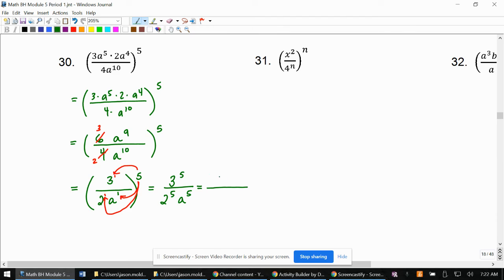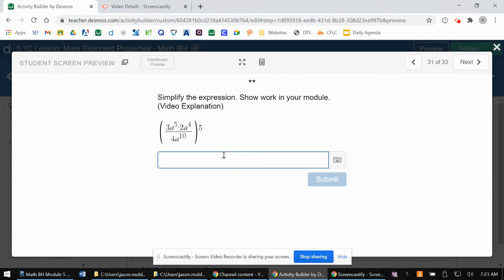All right. Now is a good time to use a calculator. 3 to the fifth is 243. 2 to the fifth is 32, and a to the fifth just stays a to the fifth. All right. Make sure we can enter this in. We got 243 slash 32a to the fifth.